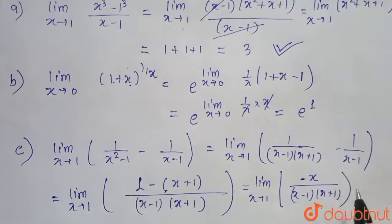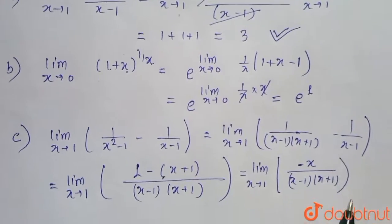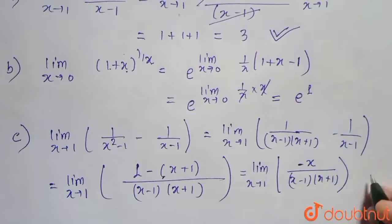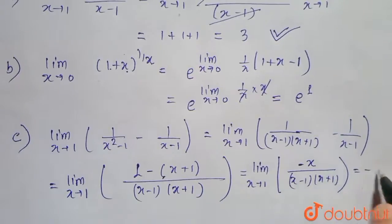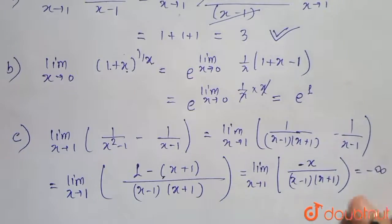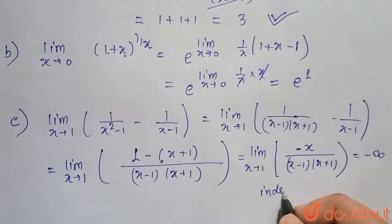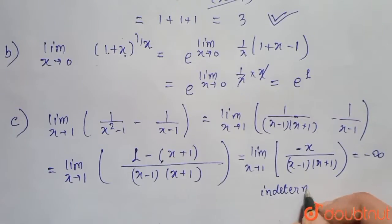Putting x = 1 in the denominator, (x - 1) tends to 0, so we get minus infinite. This means option C is an indeterminate form.